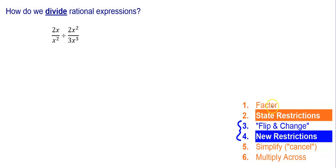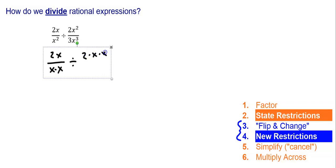The very first step is to factor everything. So I have two times x over x times x, divided by two times x times x over three times x times x. So I've factored everything.